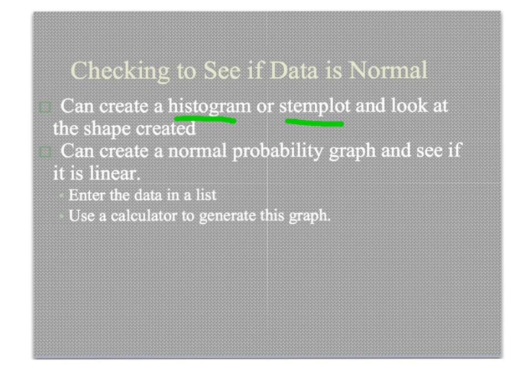However, sometimes you have a small data set where even if you look at the graph you're not exactly sure the data is normal or not because you have such limited data. So another graph that helps us determine if data is normal or not is something called a normal probability plot. And almost all calculators and computers will generate that for us.